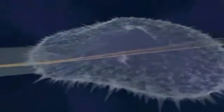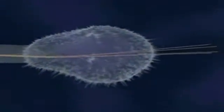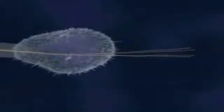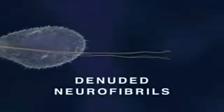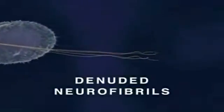Since bound GTP normally provides the energy which allows tubulin molecules to attach to one another, mercury ions bound to these sites prevent tubulin proteins from linking together. Consequently, the neurite's microtubules begin to disassemble into free tubulin molecules, leaving the neurite stripped of its supporting structure. Ultimately, both the developing neurite and its growth cone collapse, and some denuded neurofibrils form aggregates or tangles, as depicted here.